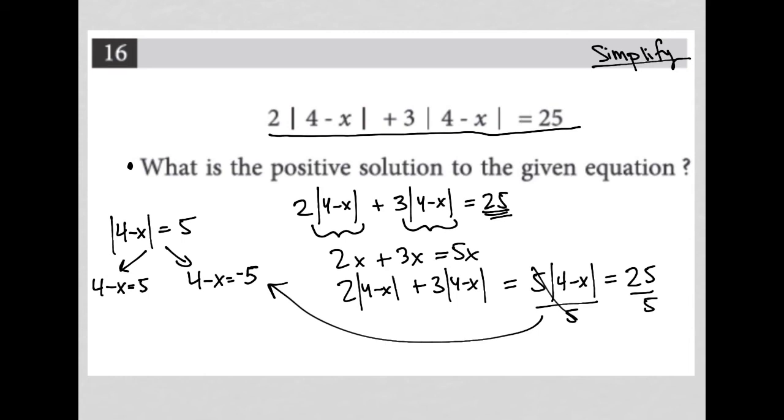So now I solve for x on both sides. Subtract 4, subtract 4. So I have negative x equals 1, and therefore x equals negative 1. So there's one solution.